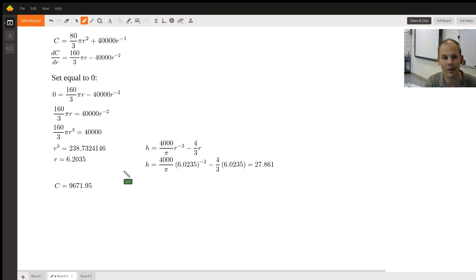Also, if we plug this all into the cost function, the cost should be about 9,671.95. You can verify this in a graphing calculator that this is where the minimum would be, the radius being this and the height being 27.861. And the cost, the minimum cost being 9,671.95. Thank you.